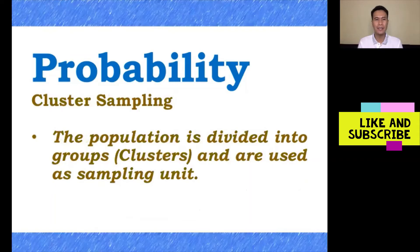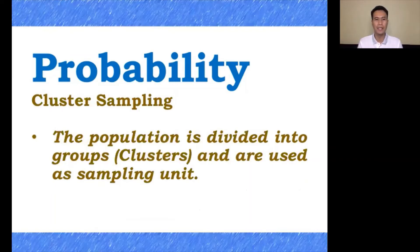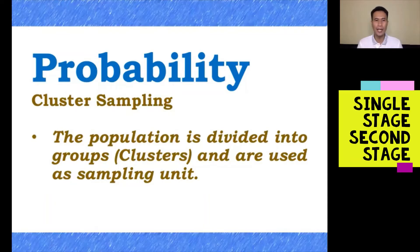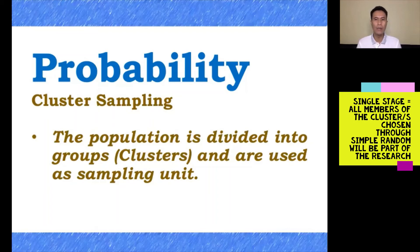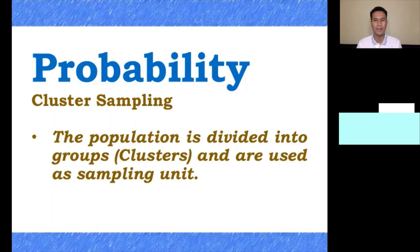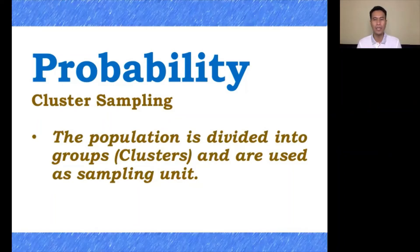Next under probability sampling is cluster sampling. The population is divided into groups called clusters, which are used as the sampling unit. There are two stages to consider. For single-stage cluster sampling, all members of the chosen cluster will be included in the research study. For example, if you have five clusters and use simple random sampling to pick one, and you pick cluster 1, then all members under cluster 1 will be your participants.